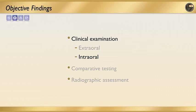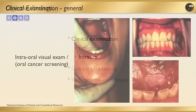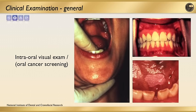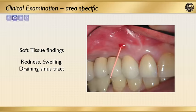For the intraoral findings, again look for asymmetries, swelling, areas of redness or inflammation — I like to compare the right and left sides of the mouth. While examining soft tissues, also check the palate and tongue and do oral cancer screening. An important sign to look for is a draining sinus tract. If a sinus tract is present, it must be traced with a gutta-percha point and a radiograph taken. You will be surprised how often the draining sinus tract doesn't arise from the tooth you think it should.